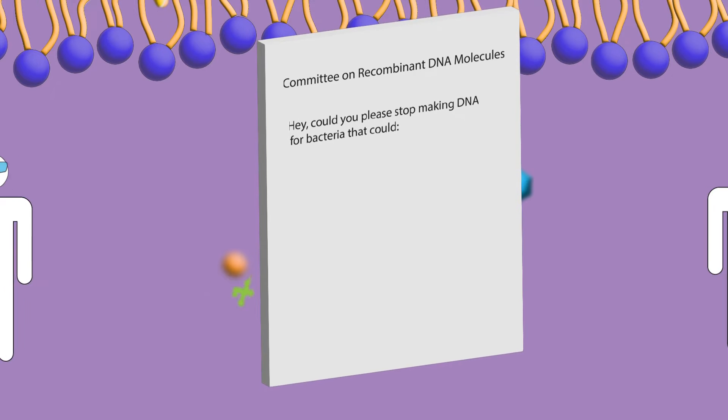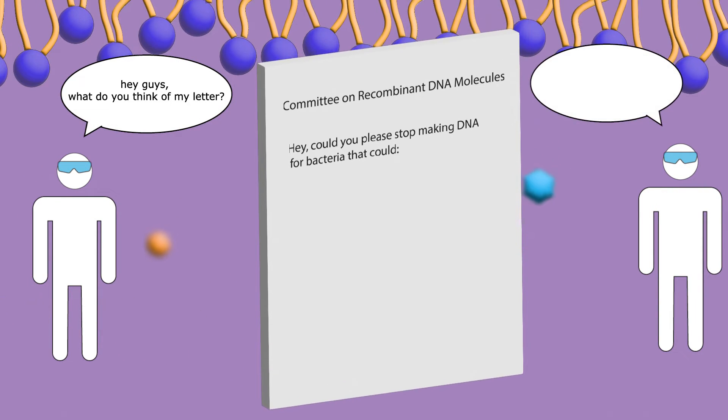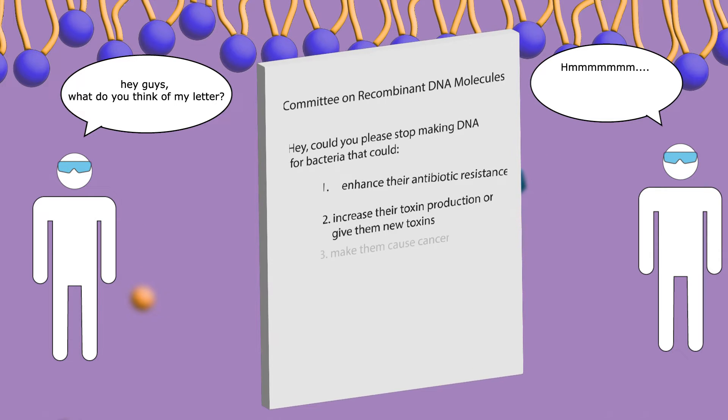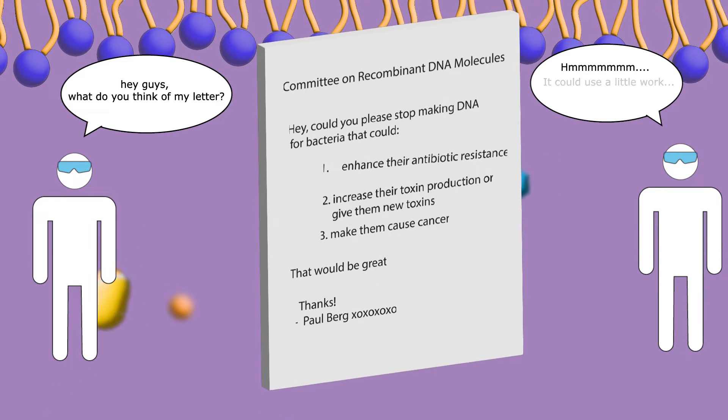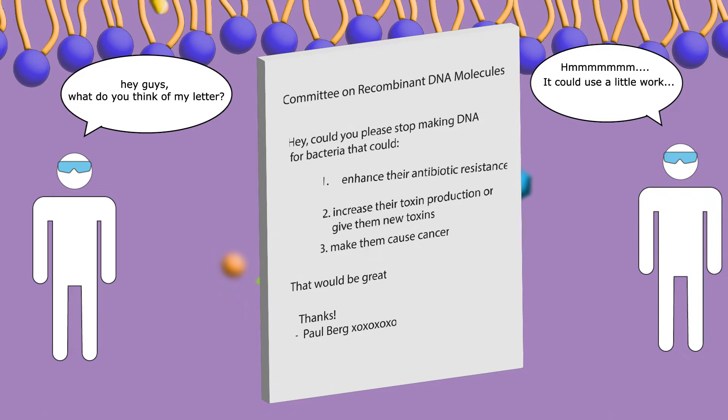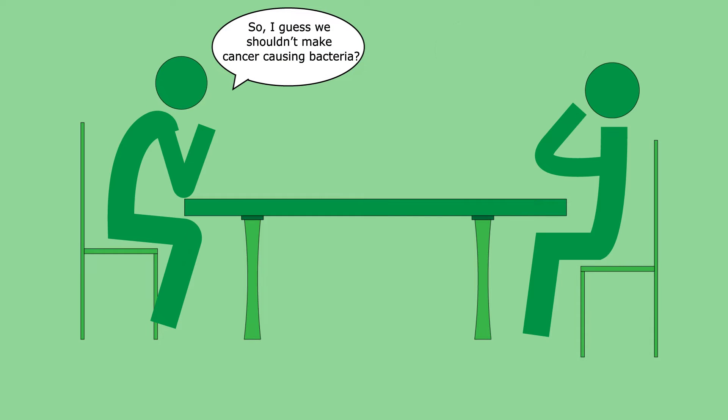First, the coalition asked for a pause specifically on experiments where the recombinant DNA could potentially enhance antibiotic resistance of bacteria, increase levels of toxin production or introduce new toxins to bacteria, or cause cancer in humans. This moratorium was upheld by scientists worldwide until a formal conference was held the next year to discuss the risks in detail and set guidelines for scientists to follow for the foreseeable future.